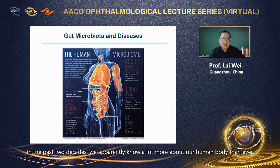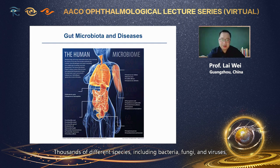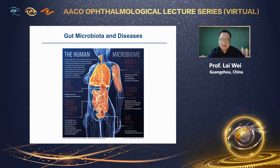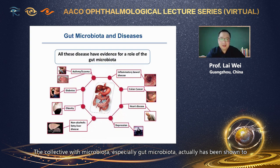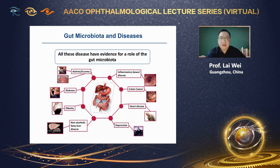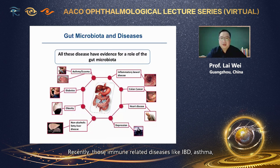In the past two decades, we apparently know a lot more about our human body than ever. One important thing is that we know in our body, actually, we have a lot of microbes — much more than what we used to know. Thousands of different species, including bacteria, fungi and viruses, actually live with us together as an enemy and also as friends.